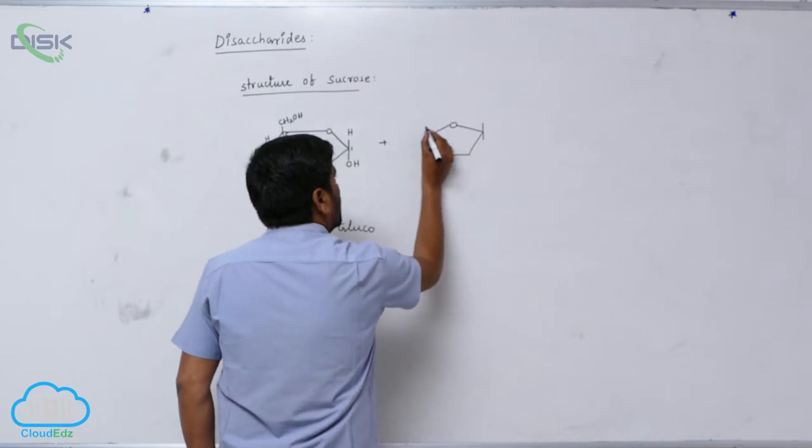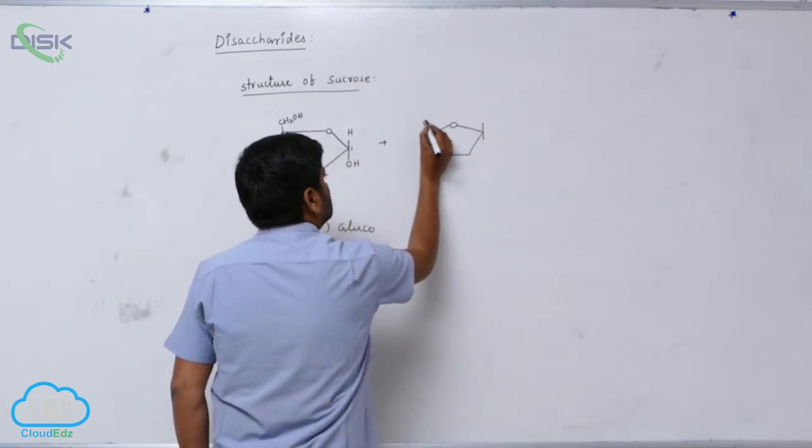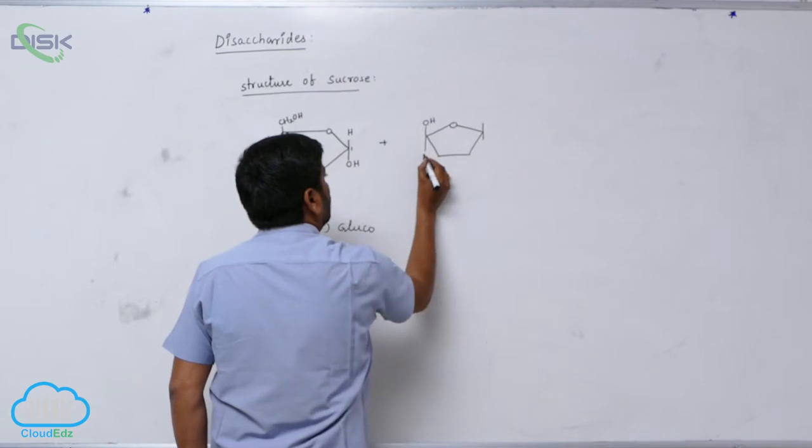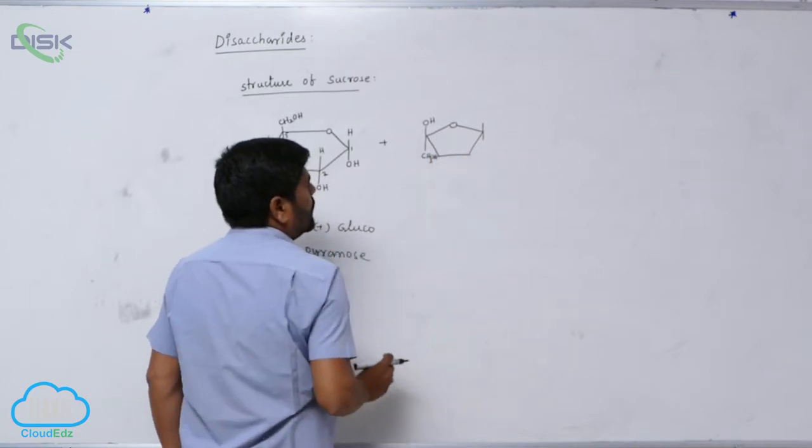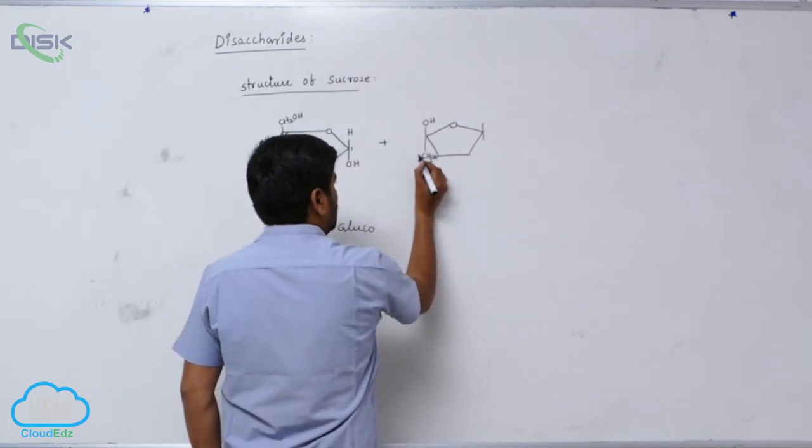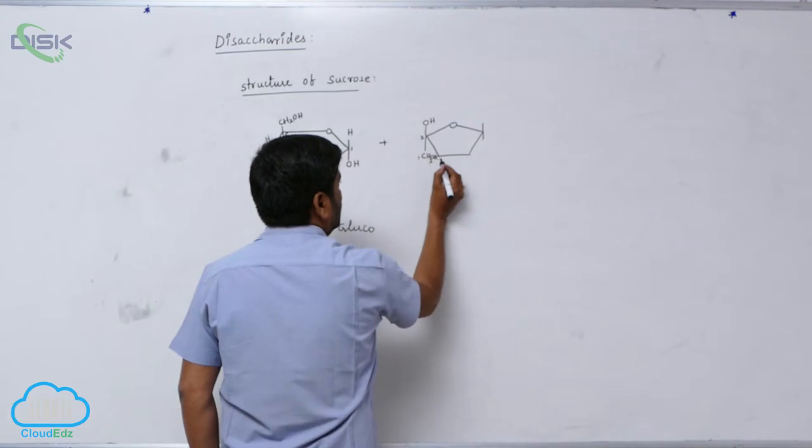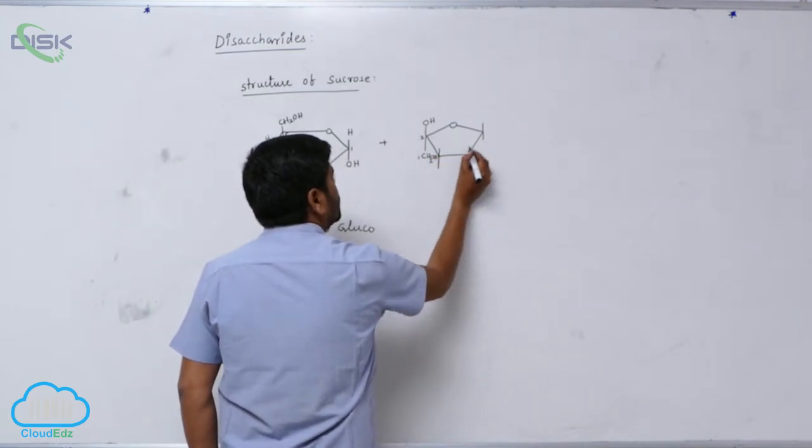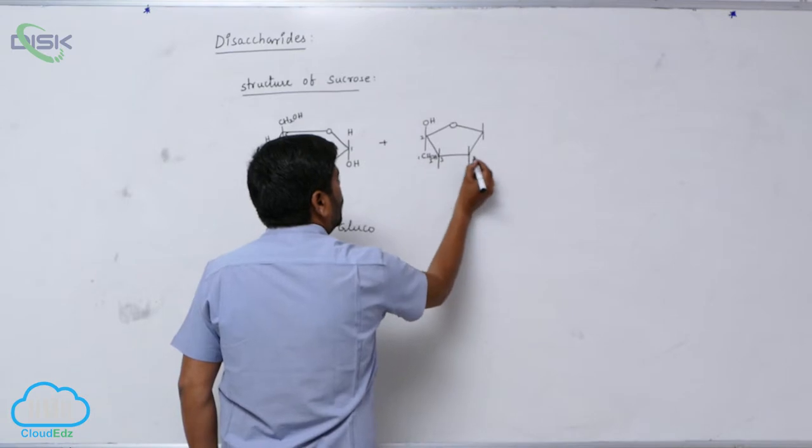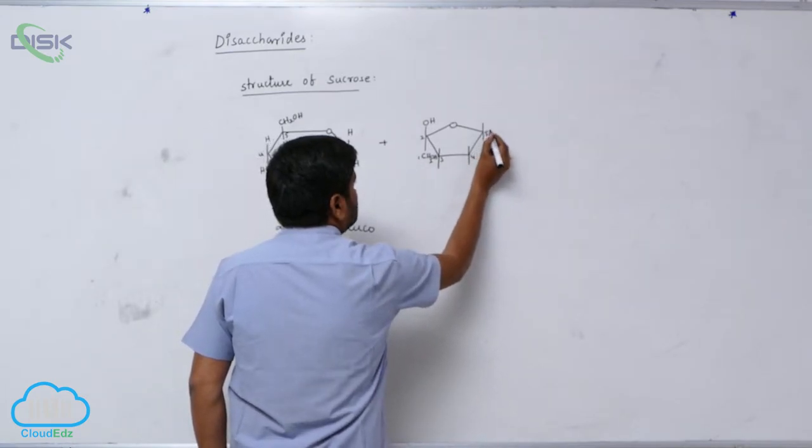Beta means the first carbon OH is above, this is CH2OH. This is the first carbon, second carbon, third, fourth, this is fifth.